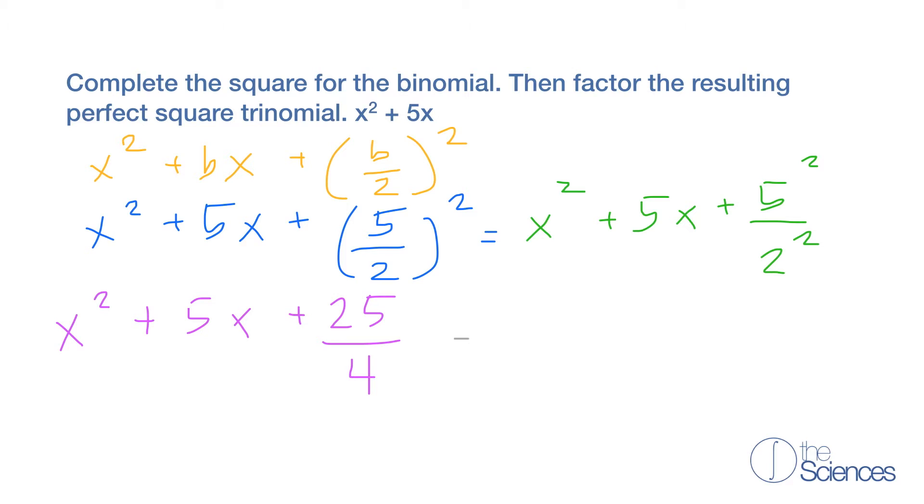So now here we have a perfect square which can be written in the form of x plus 5 over 2 squared, and that's our answer.